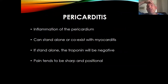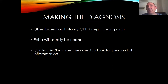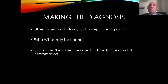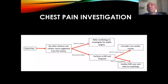On pericarditis — inflammation of the pericardium, which may or may not coexist with myocarditis. If it's pericarditis on its own, troponin is negative because troponin leaks from myocytes, not from pericardium. The pain tends to be sharp and positional, with raised CRP but negative troponin on history. Echo is usually normal, though sometimes you see bright pericardium. If you really want to go to town, an MRI can be done, but usually diagnosis is based on history, CRP, and ECG changes. Treat with colchicine. Prognosis is usually good and self-limiting; non-steroidal anti-inflammatories are fine in younger, fitter patients. Occasionally pericarditis can be aggressive but most of the time it will just get better on its own.